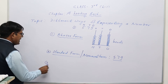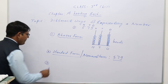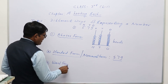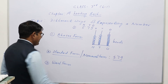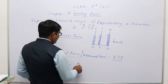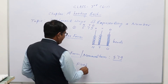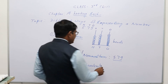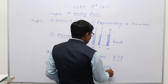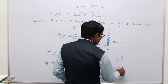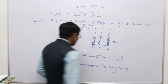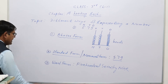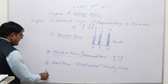The third form is word form. In word form, the given number 579 is written out in words — five hundred seventy-nine. This is how we write the given number in word form.